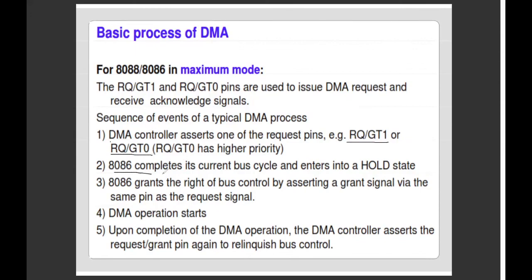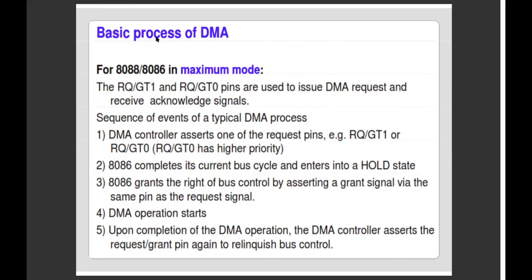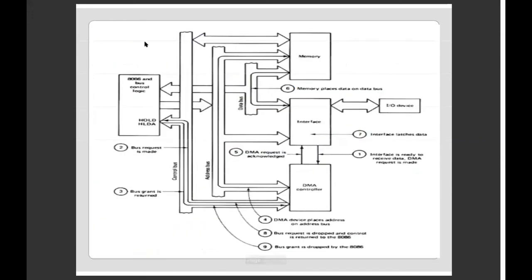The request is sent to the 8086 using the Hold State. The request will be sent to RQGT1. We use the grant signal to accept the request at RQGT1. We will start the DMA transfer. The request is written to the DMA controller, and we request the interface and then the bus request.